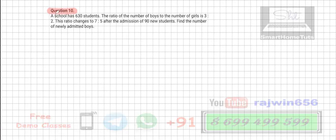Okay, question 10. A school has 630 students. The ratio of the number of boys to the number of girls is 3 is to 2. This is what is given to us. This ratio changes to 7 is to 5 after admission of 90 new students. It means we don't know how many boys and how many girls are there in that.